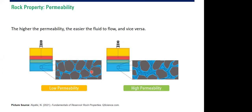The reservoir has two most important properties. The first is permeability — the higher the permeability, the easier the fluid flows, and vice versa. This shows low permeability where you can see the streamlines, whereas high permeability produces higher oil flow rate or liquid flow rate. So the first of the two most important parameters is permeability, to enable liquid, fluid, or gas to flow.